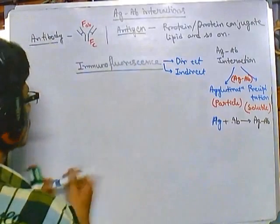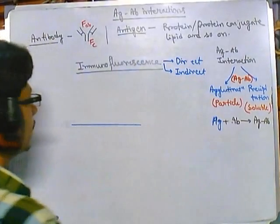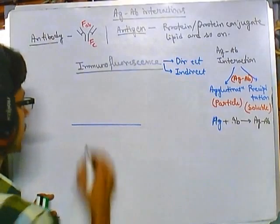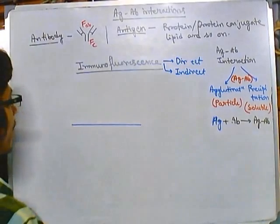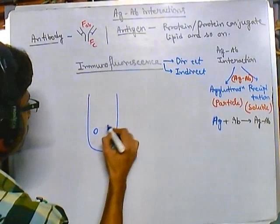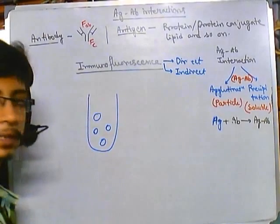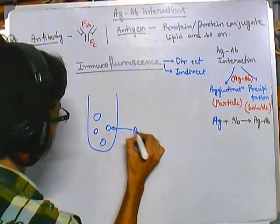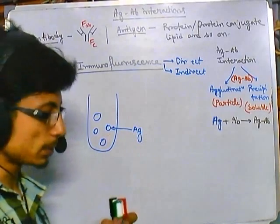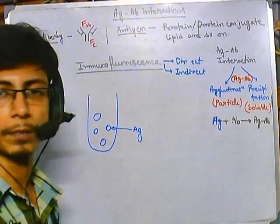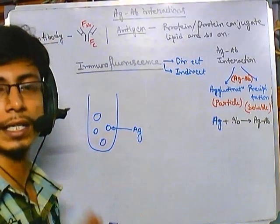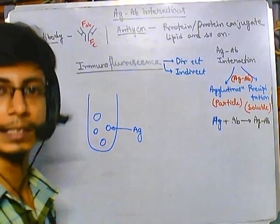For example, say this is our sample — a sample holder. In this sample we are having antigens. We don't know the concentration of antigen in our sample. Suppose we take the serum or blood of a patient; we don't know the amount of antigen present. Because antigens are directly related to diseases, if we measure the concentration of antigen, we can find out what kind of disease that patient is having.